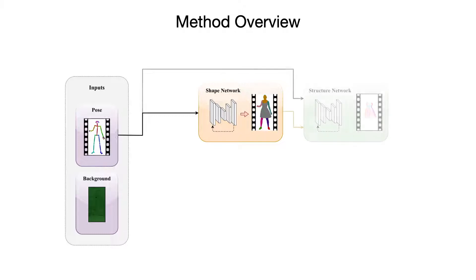As body part segmentations do not provide information about internal deformations within the clothing, we apply a second translation network that estimates the internal structure of clothing as direction and confidence of local gradients. The resulting clothing structure estimates the state of wrinkles and texture pattern deformations that are crucial for visually appealing motion transfer.